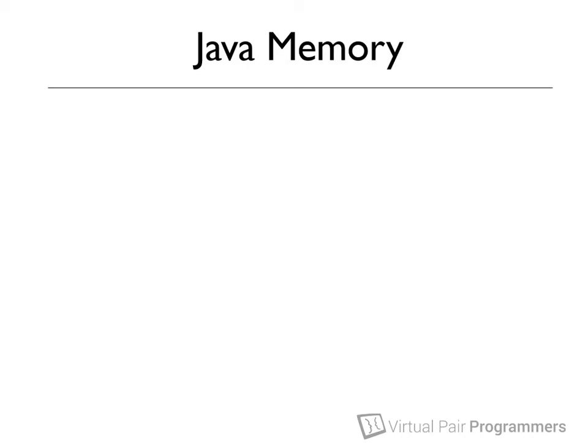Our starting point, then, is understanding the terms: the stack and the heap. When our applications run, they need access to some of our computer's memory — for example, to store the objects that we create and hold in memory. This memory is split into two sections: the stack and the heap.